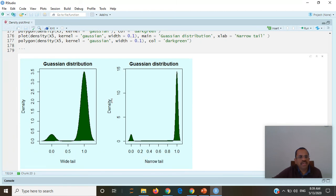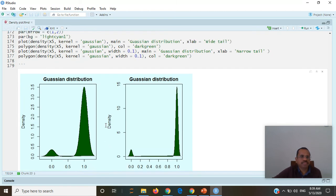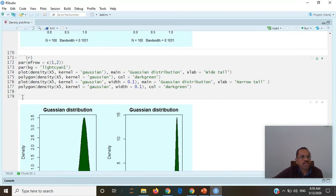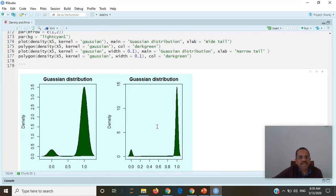To minimize the problem of this tail going into non possible territory we can change the width of this. We can change whatever the width we feel suitable. This is the same data but the width or tail is now narrower here.